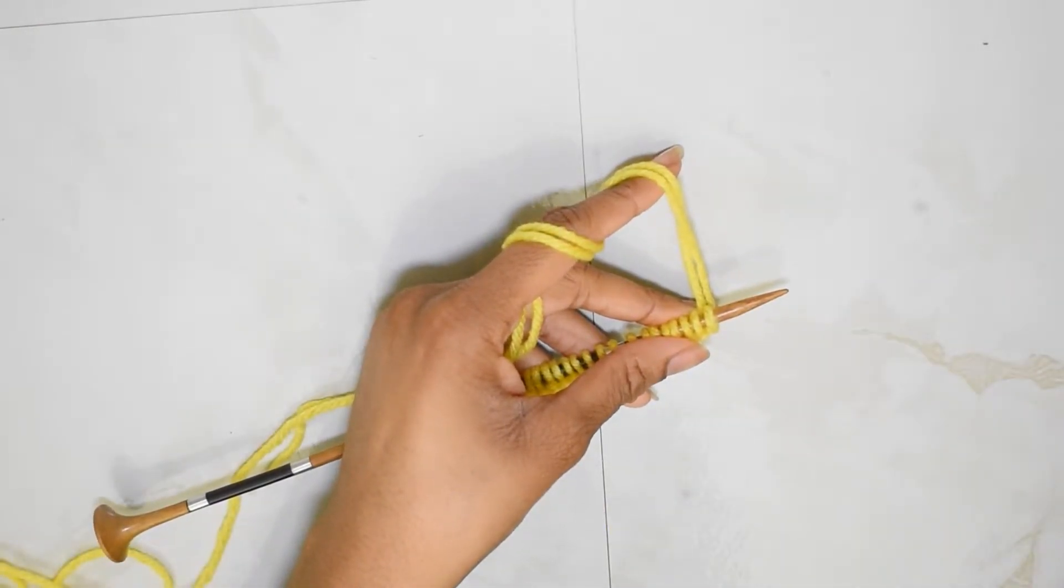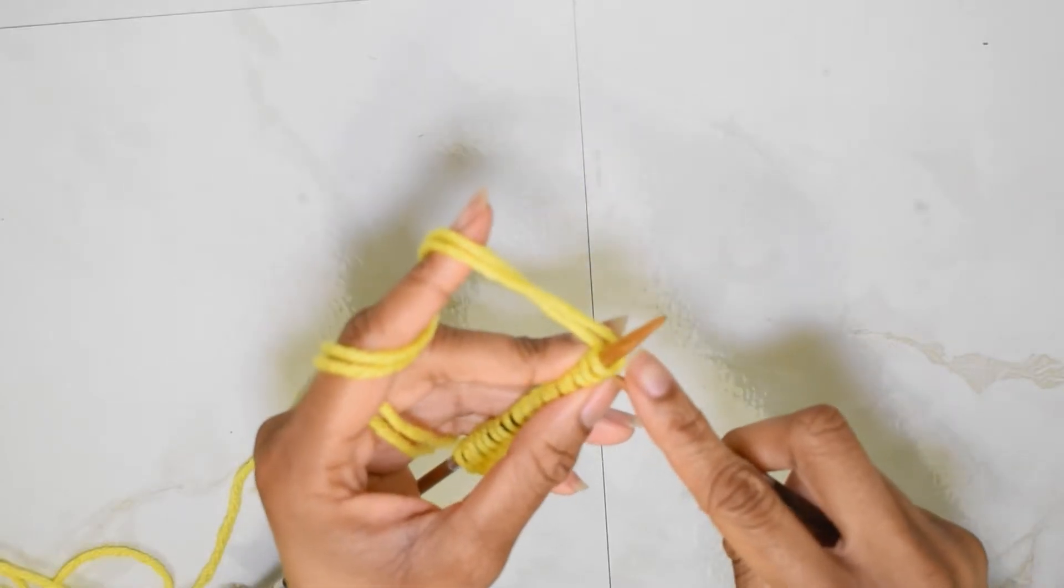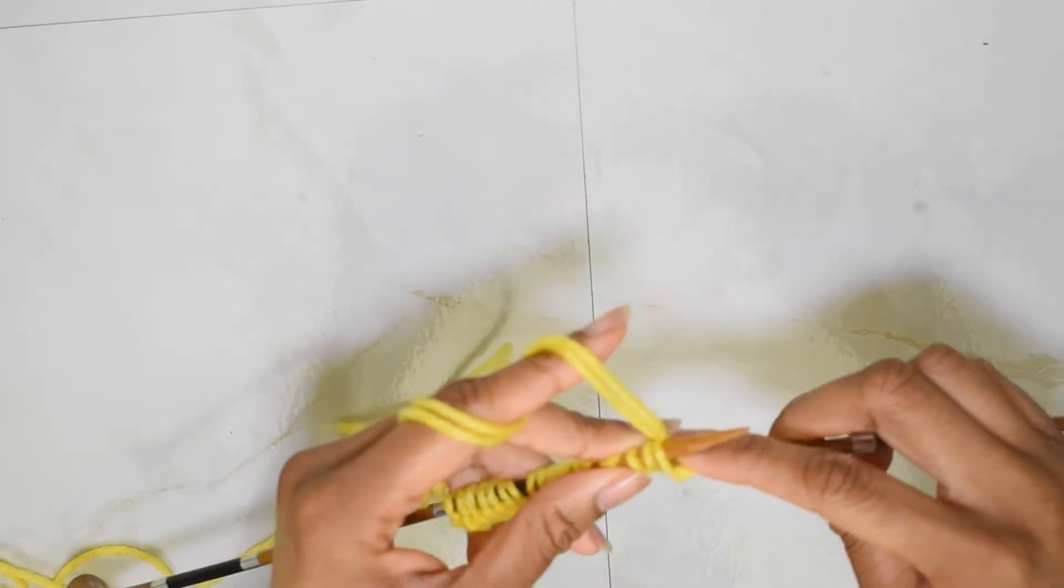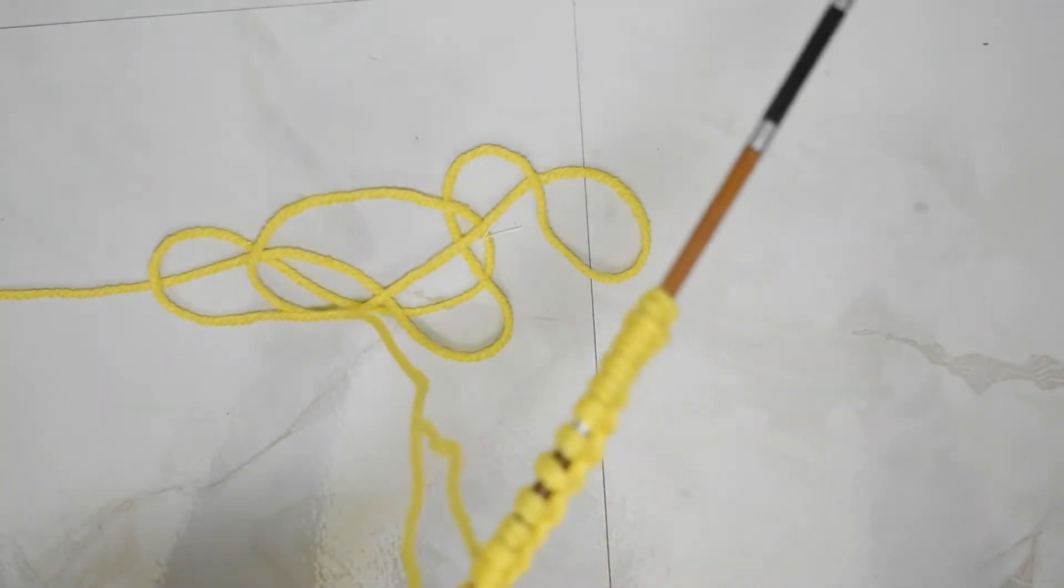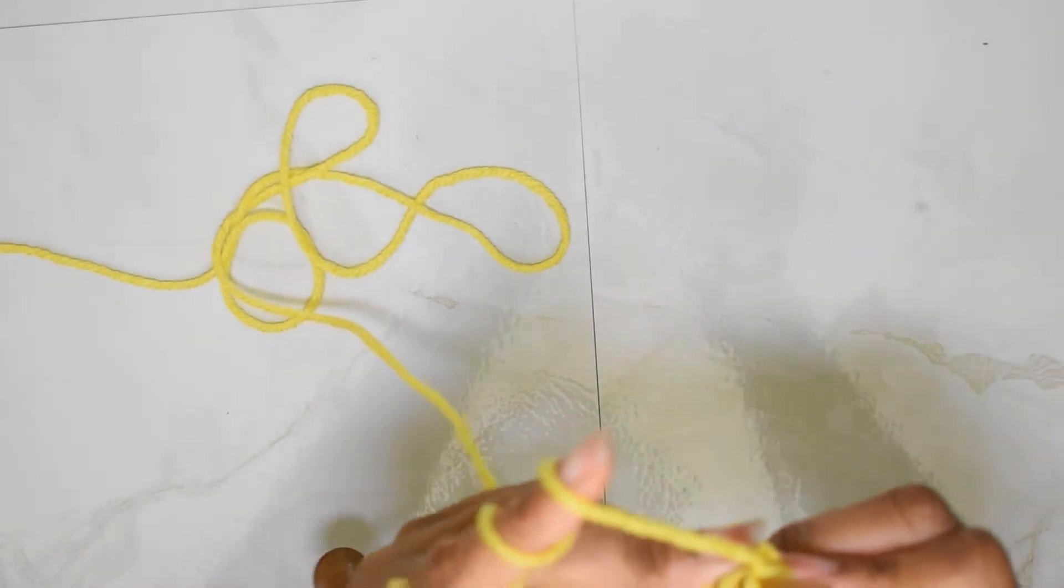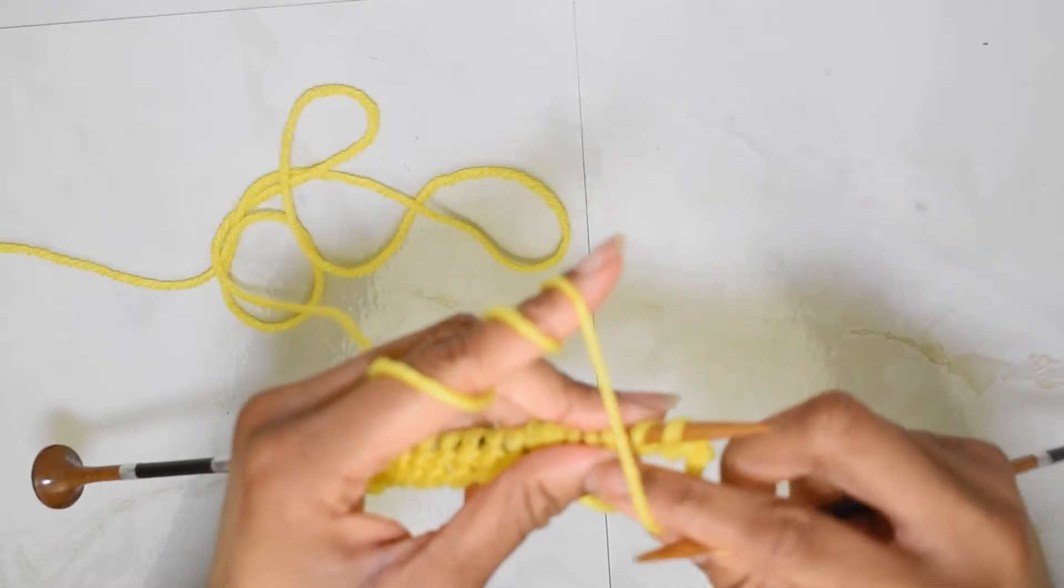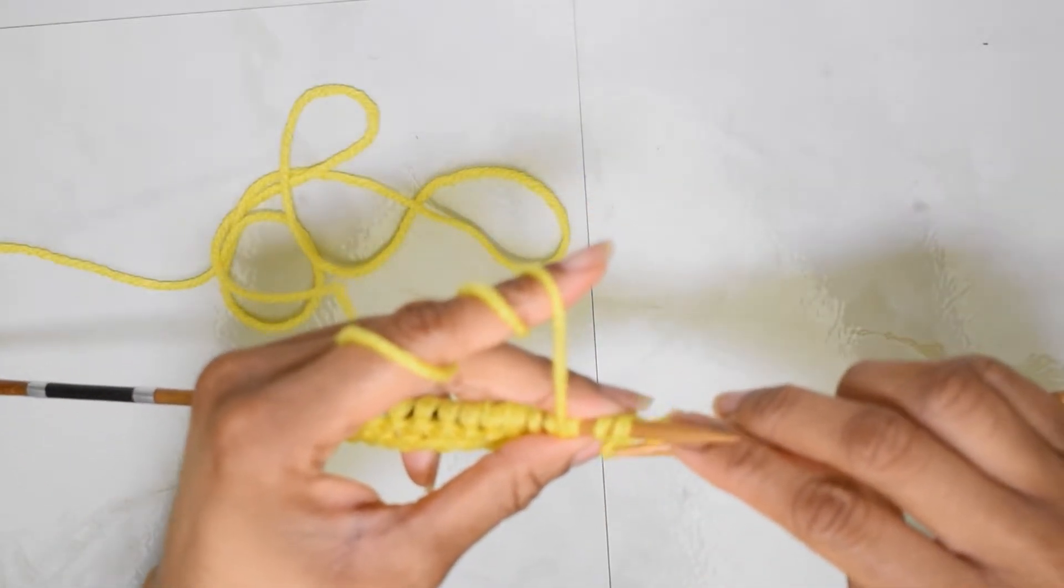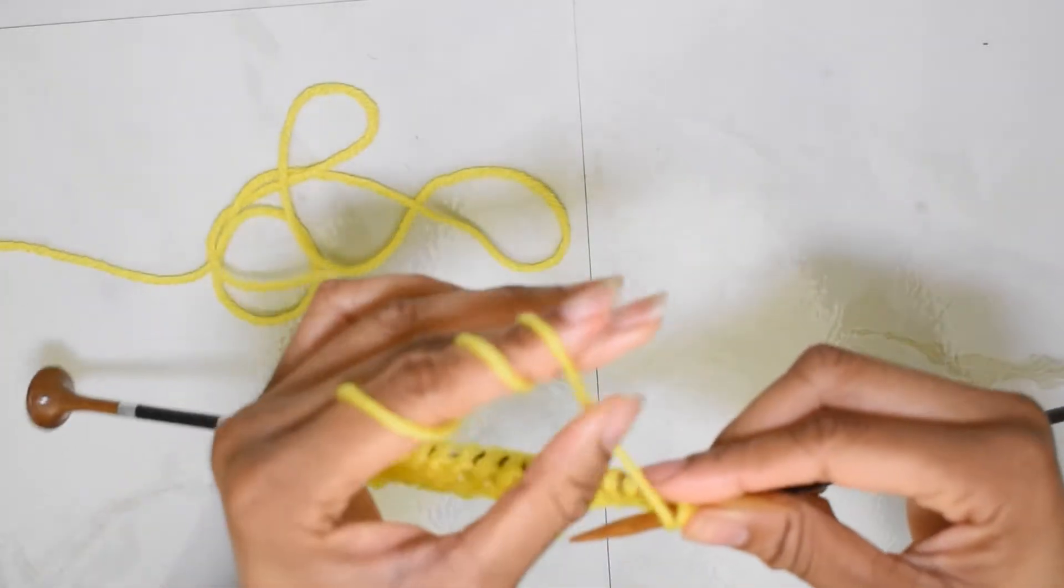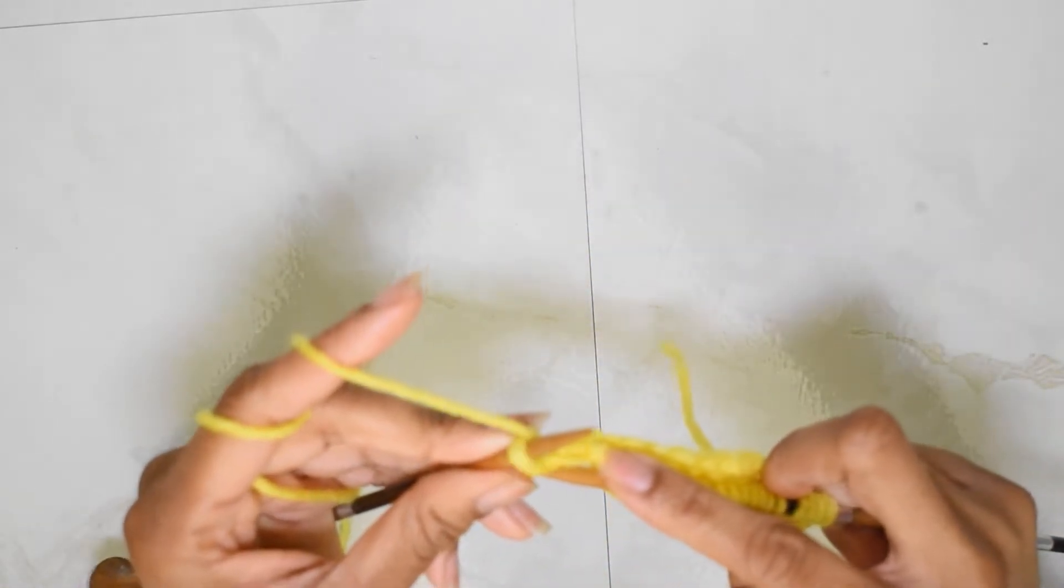Alright so I've cast on a total of 18 stitches yet again and now what I'm going to do is knit all of row one. Okay row two is going to be all purling so for me with the exception of my selvage stitches which I always knit. We're going to be bringing our yarn forward and we're going to purl. Alright and we're going to finish off the row with our selvage stitch.